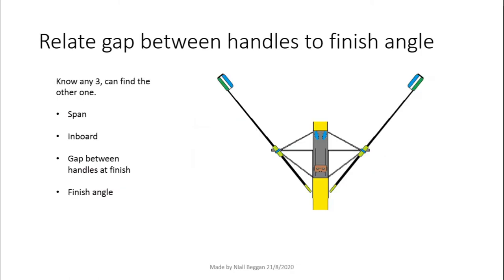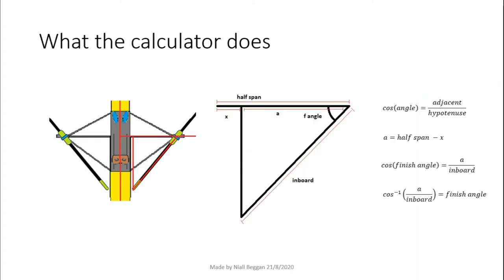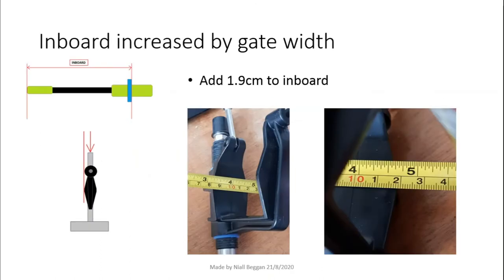The calculator is a simple way to find a finish angle if you know three other things: the inboard of the oar, the span, and the gap between the handles at the finish. I calculated the finish angles by drawing a right angle triangle with the inboard of the oar as the hypotenuse. If you know the length of one other side of the triangle, you can find the finish angle with the cosine rule. To find the other side, labelled A, I looked at video footage and estimated the gap between the oar handles at the finish. You can see here that the side A is half of the span minus half of this gap between the oar handles at the finish. I added 1.9cm to the inboard for the calculation because the oar does not sit exactly against the middle of the pin.